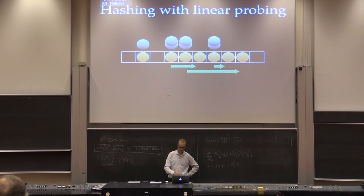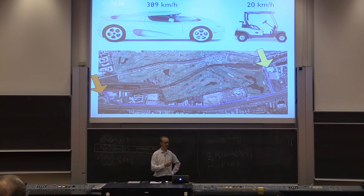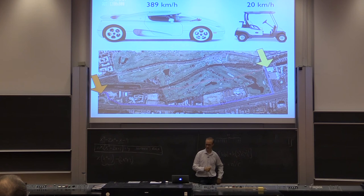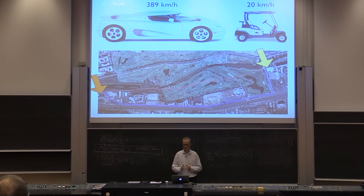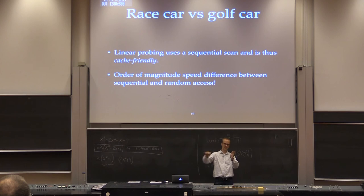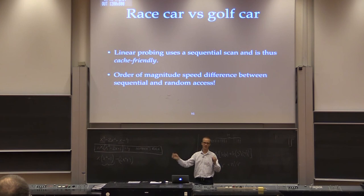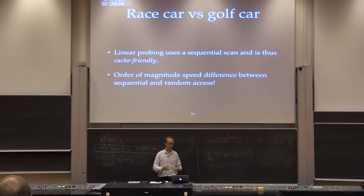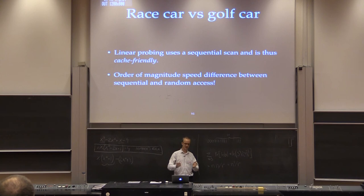Why is linear probing still relevant? It looks like things will pile up — once you have a lot of keys in one place, even more will accumulate. But consider the speed: you can either take a short route at golf cart speed (20 km/h) or a longer route at racing car speed. That's similar to memory access — linear probing just scans sequential memory, whereas other hashing methods jump around in memory. The speed difference is about an order of magnitude, so if you can use sequential scans rather than random accesses, that's a big advantage.